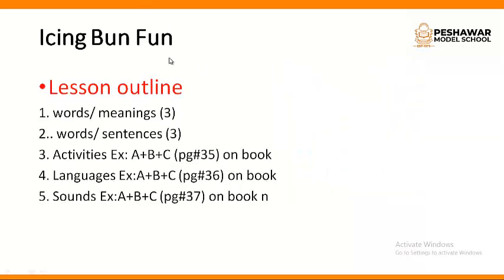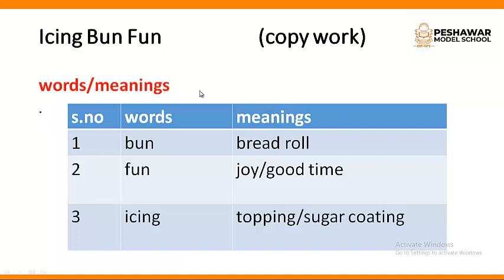Dear students, you have to write this lesson outline in your English A copy — words meanings and word sentences. We have to do three word meanings and three word sentences in the English A copy. Rest of the exercises will be done in the book — that is activities, language, and sounds exercises. You have to do those in the book. Then the three word meanings should be done in the English A copy.